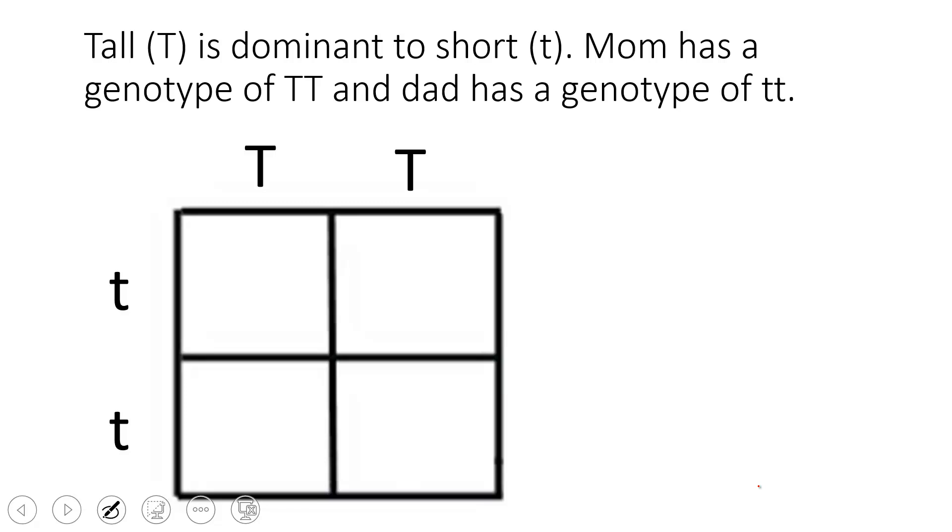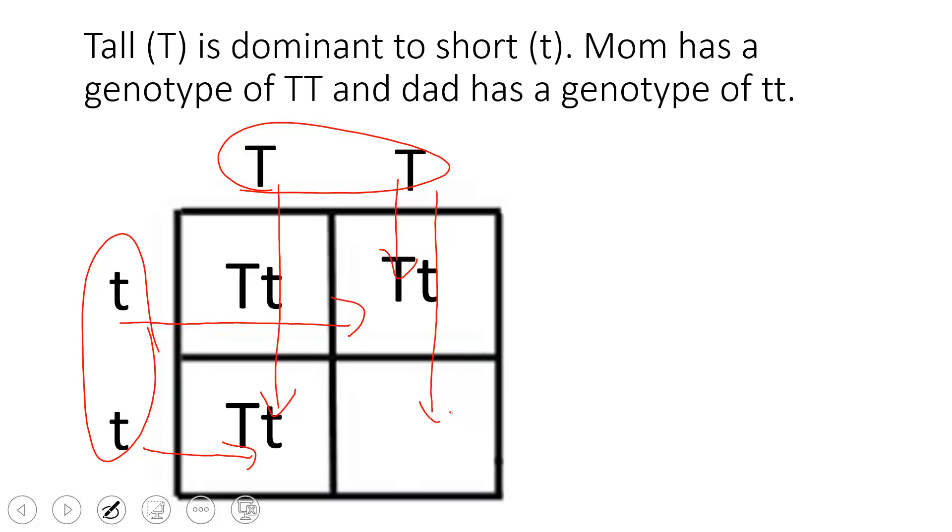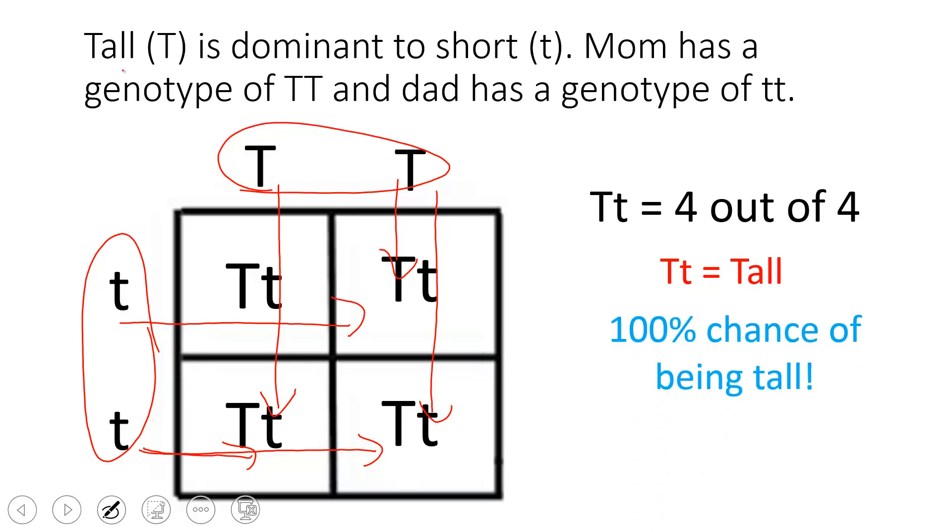Okay, so let's take a look. Tall is dominant to short, and I know my first step is that I have to put the genotypes on the top and on the side. I go ahead and put the first genotype here, second genotype there. I know now I need to drop the tops and slide the sides. So I drop this down, put this across, gives me an uppercase T, drop this down, put this across, and then again drop it down, put this across. What I see is that I need to count the genotype. I have four uppercase T, lowercase t, all four of them, and I convert that to a percent. Four out of four is 100%. And so 100% have the chance of being tall, because we remember that uppercase T, tall, is dominant. So they have 100% chance of being tall.